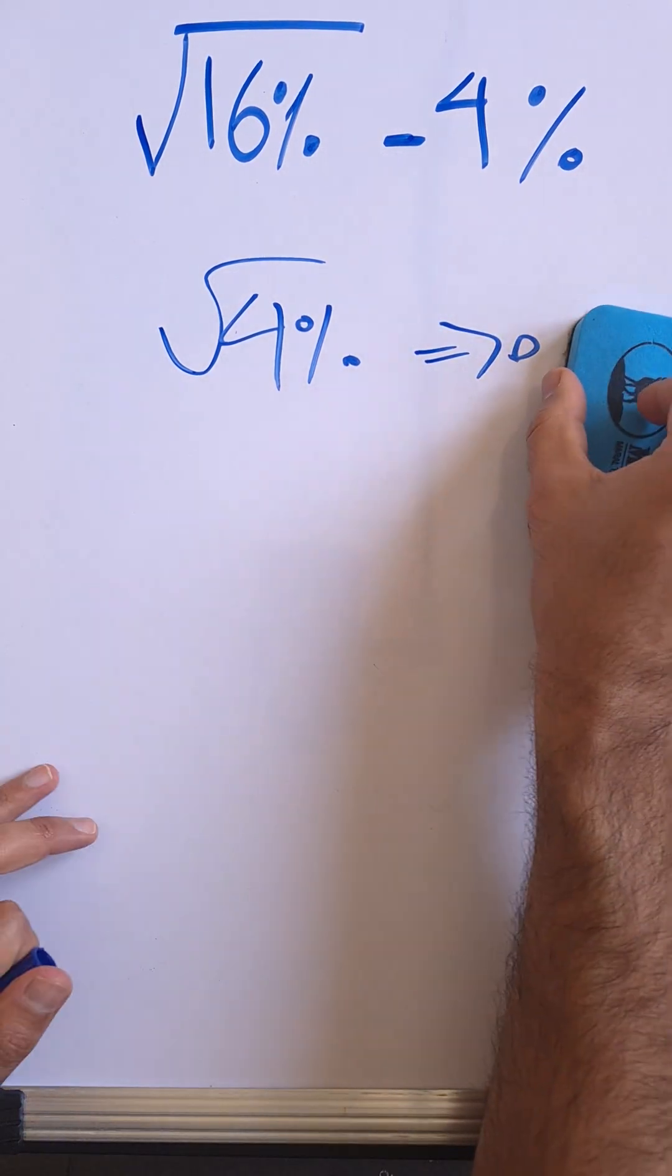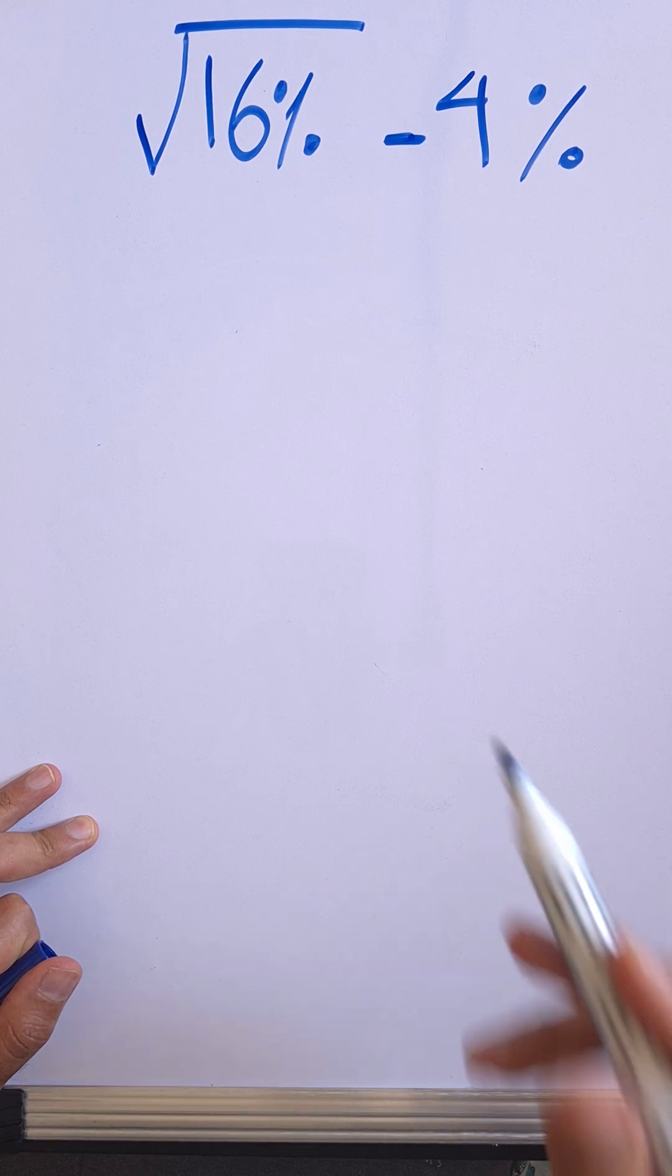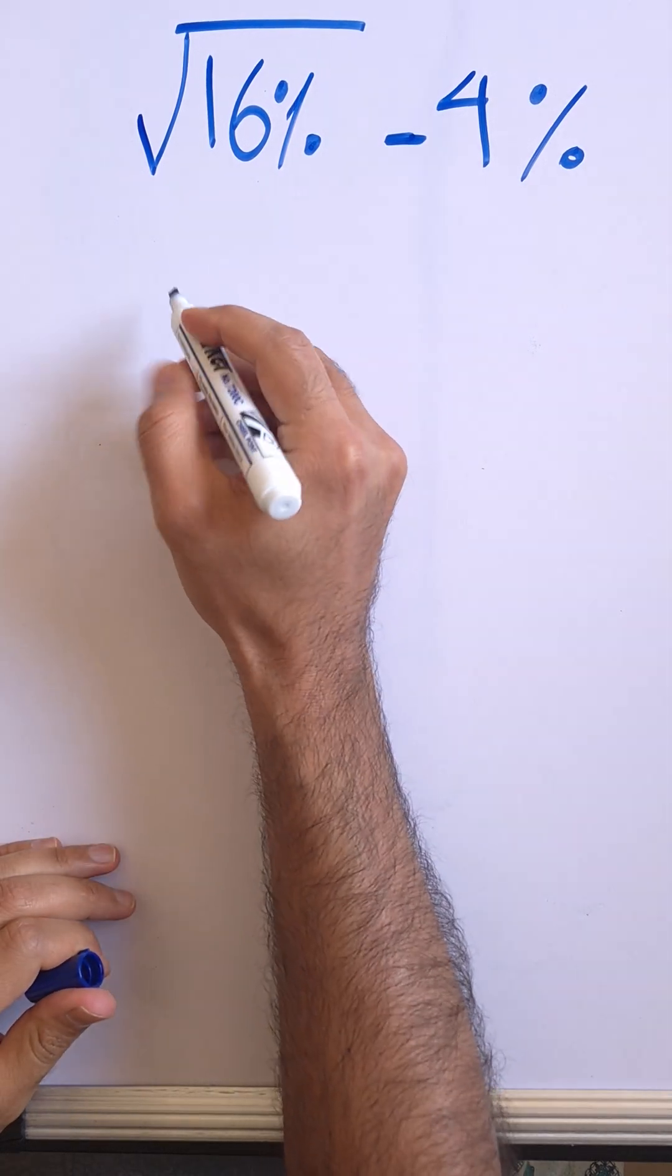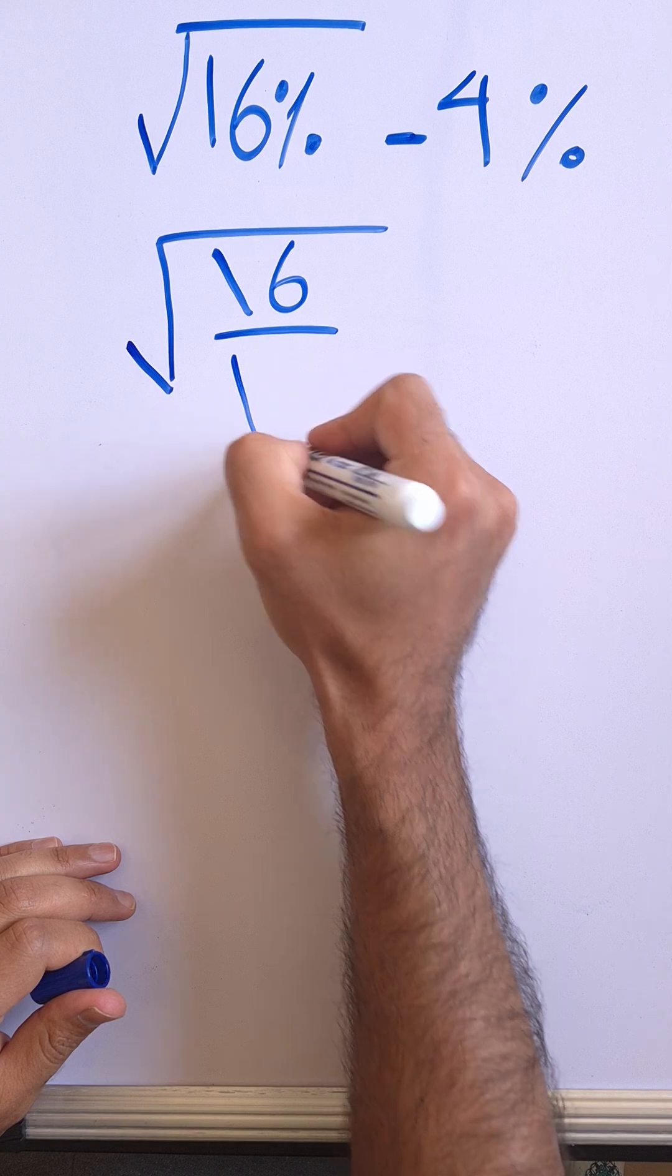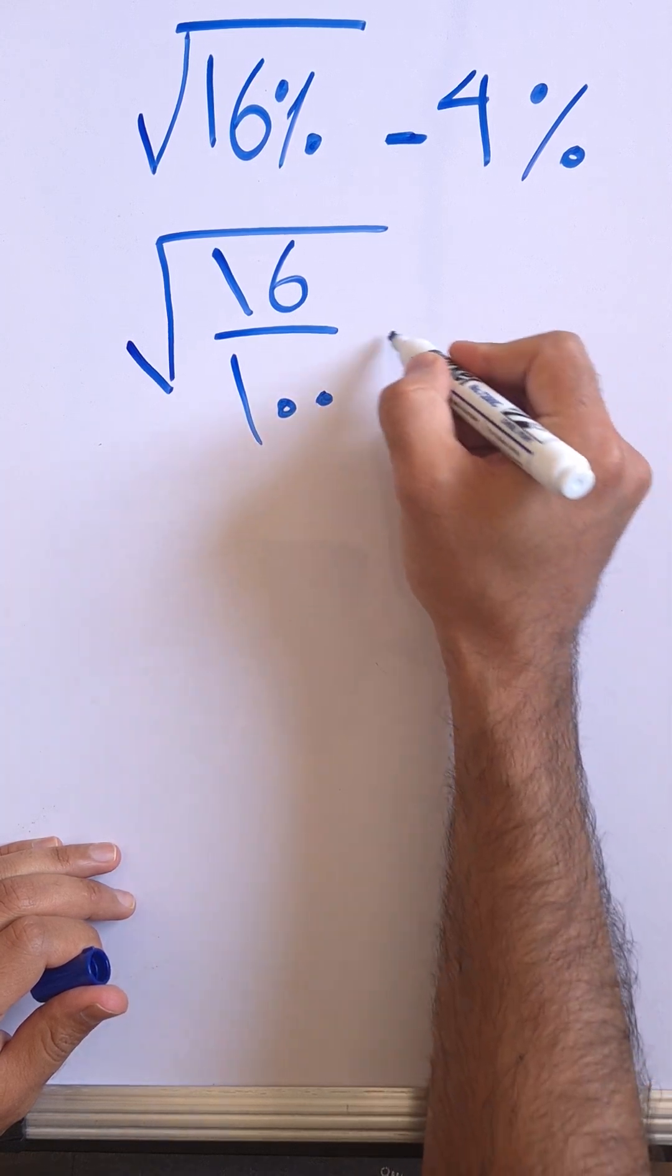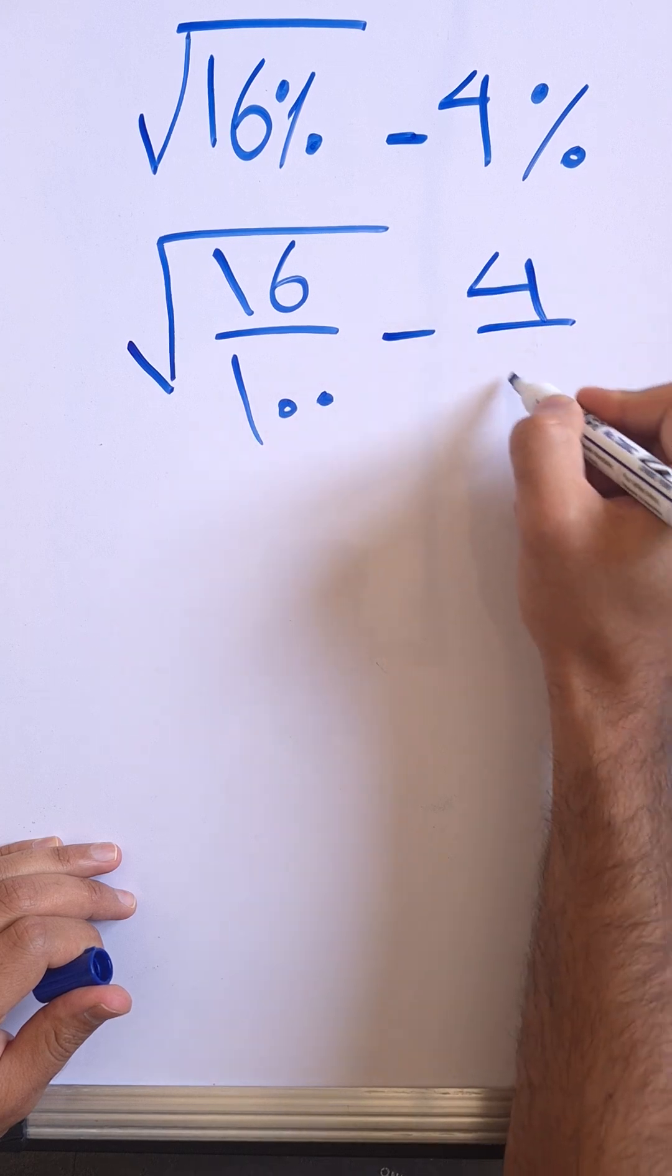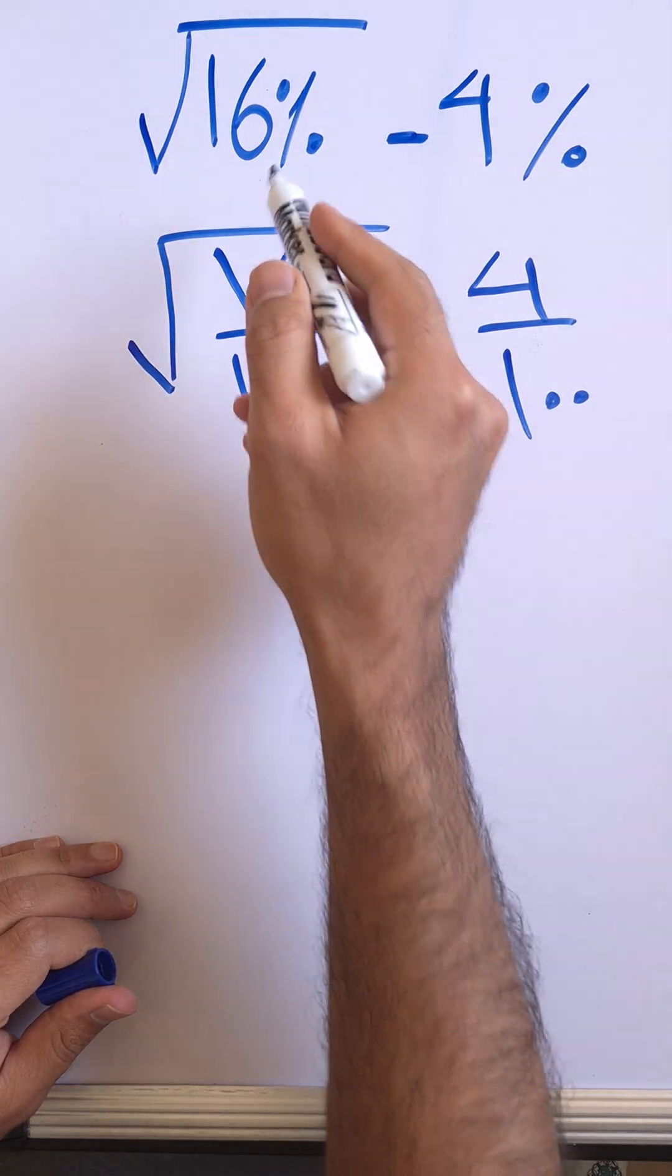We need to first convert 16% into a decimal number, just into a fraction. So root 16% is root 16 over 100 minus 4 over 100, right? So 4% is 4 over 100, 16% is 16 over 100.